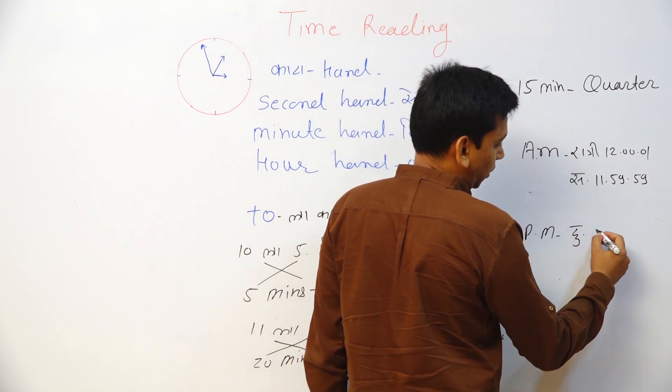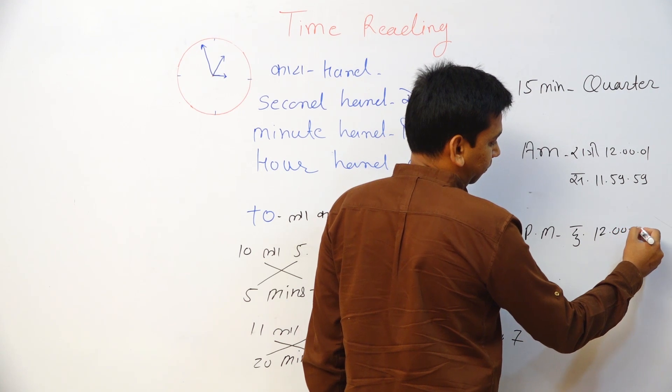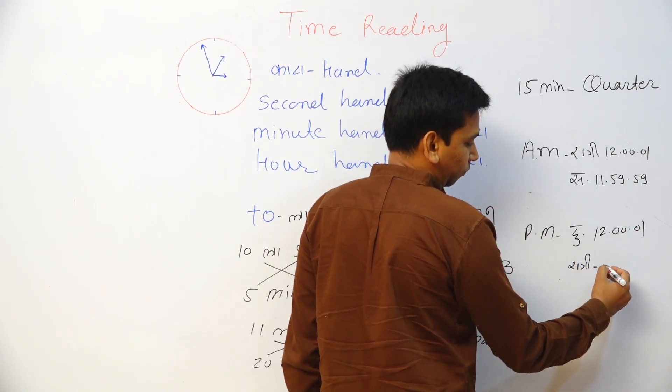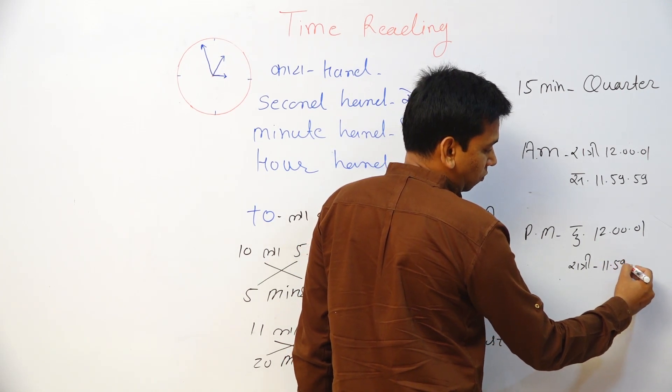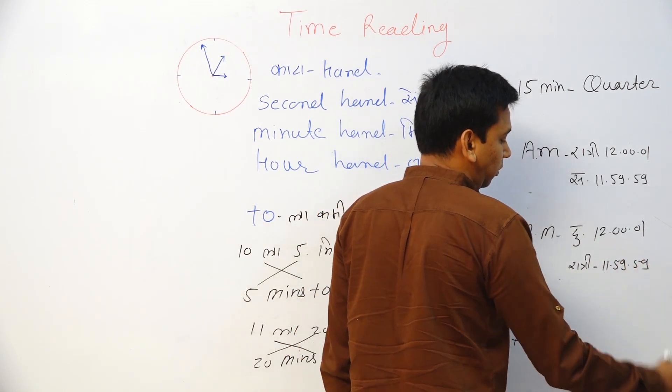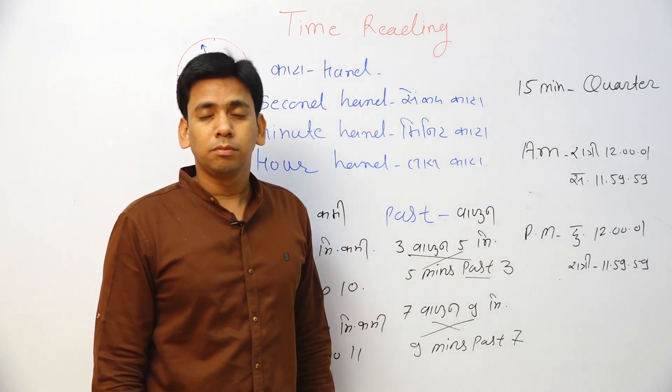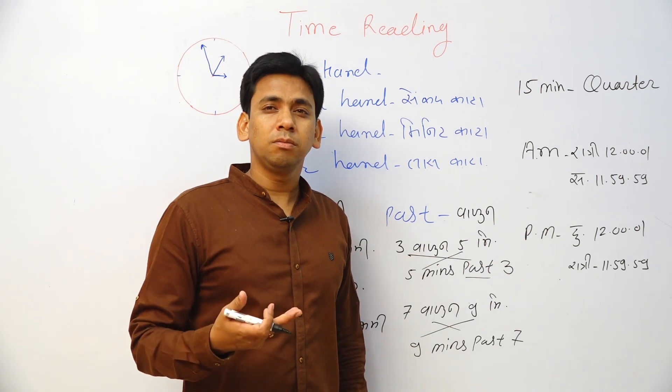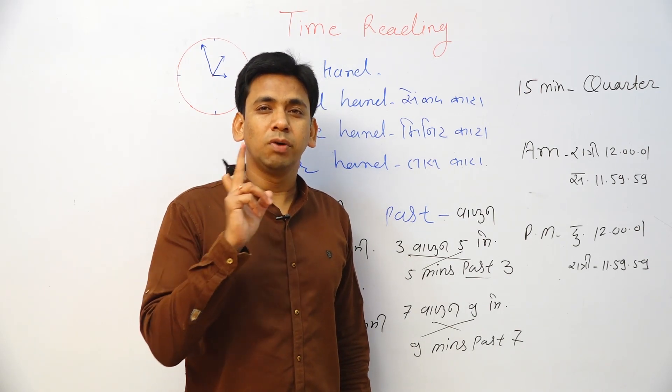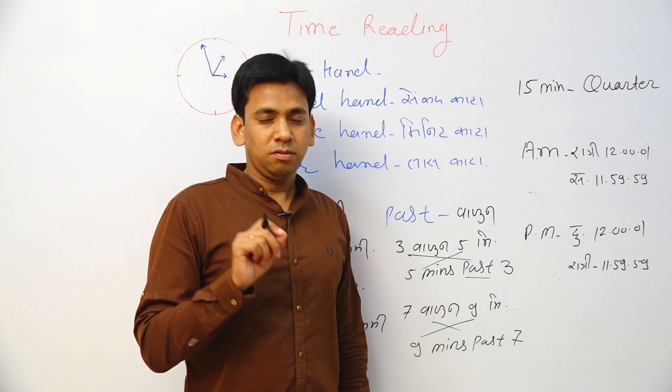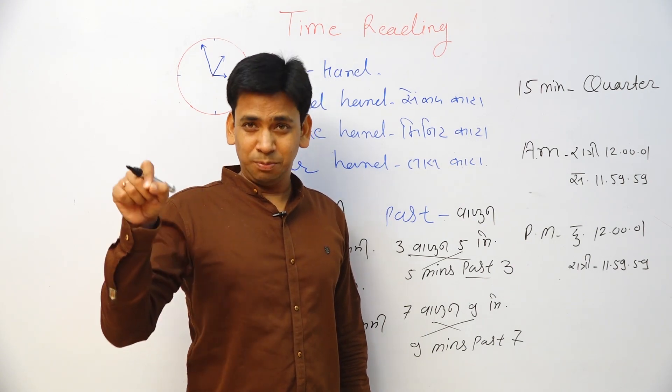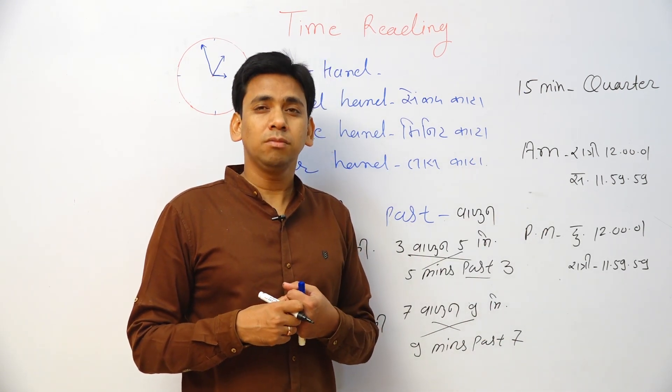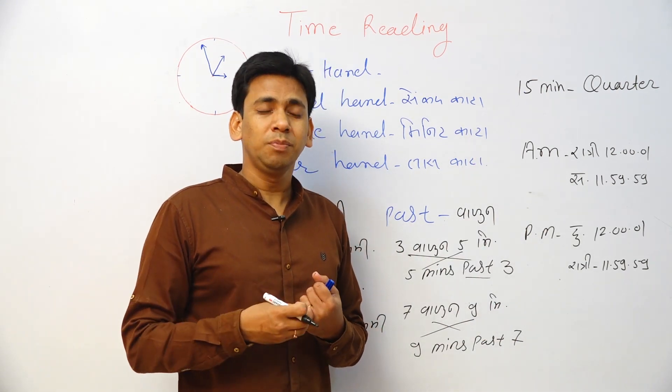And what is the PM? Afternoon, 12 o'clock plus 1 second till night 11:59:59, that's PM. Night 8: 8 PM. Afternoon 3: 3 PM. Afternoon 1: 1 PM. So that is called PM. Night 11: 11 PM, 10 PM, 9 PM.